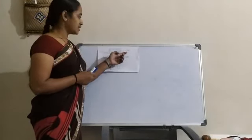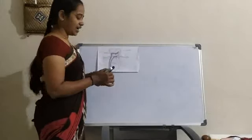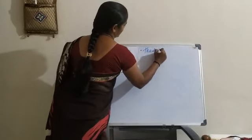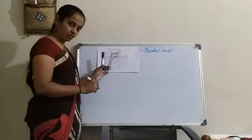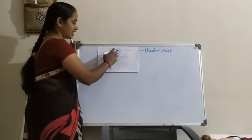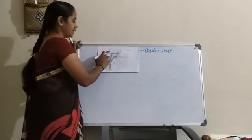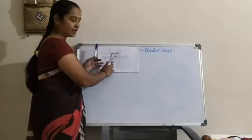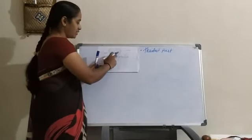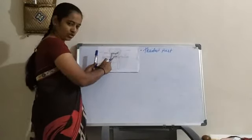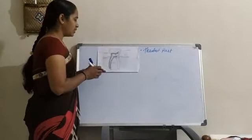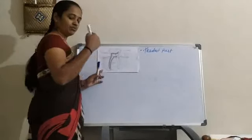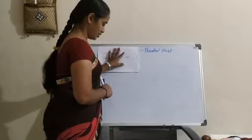Enamel is very hard. Why is it so hard? Because we have to eat different foods, so it should be very hard. It is the hardest part of our body — even harder than bones. Dentine is the next layer after the enamel, and it is not as hard as the enamel; it is a little softer. The pulp is the innermost part, which has all the blood vessels and nerves. Blood vessels provide nutrients to the teeth for growth, and the pulp is the softest part of the tooth. This is the gum, and this is the jaw bone in which the teeth are situated.